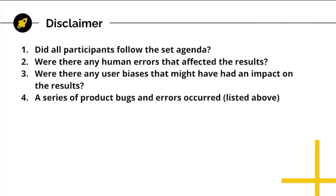You always want to account for bias — I can't overstate this enough when it comes to UX research. A disclaimer is how you can do so in a report. There might be various factors that influence the results of the usability testing, and it's important to identify and list them. Some examples of questions include: did all participants follow the set agenda? Were there any human errors that affected the results?